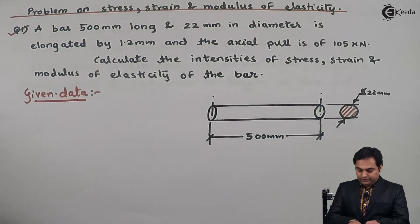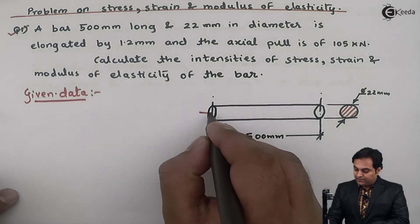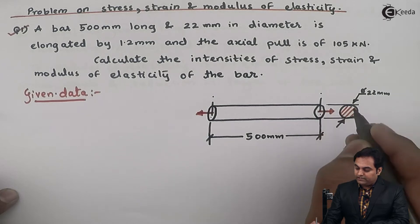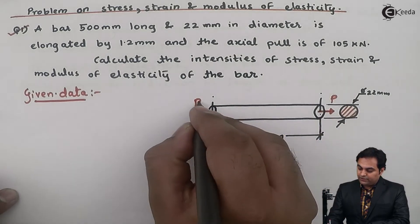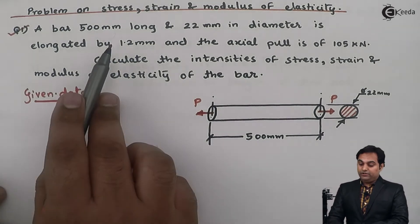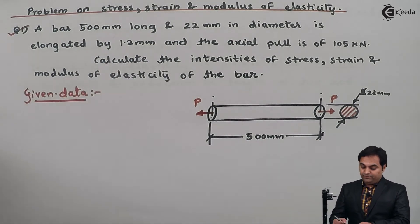So here P indicates the pull type of load on the bar, and elongation is given as 1.2 mm. So elongation is denoted by ΔL, that is 1.2 mm.